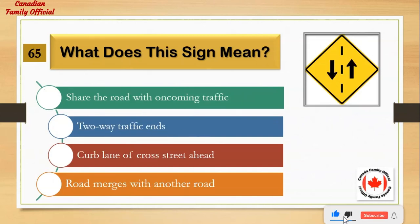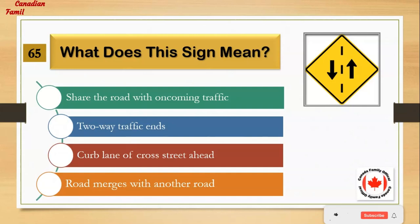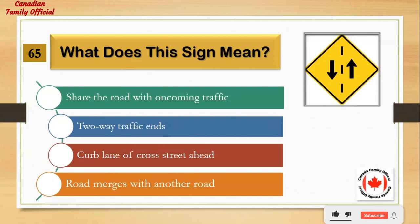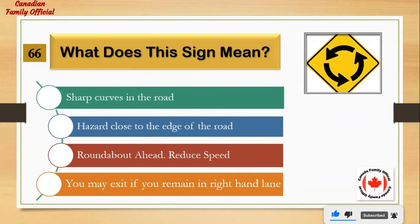What does this sign mean? Number 1: share the road with oncoming traffic. Number 2: two-way traffic ends. Number 3: curb lane of cross street ahead. Number 4: road merges with another road. And the answer is: share the road with oncoming traffic.